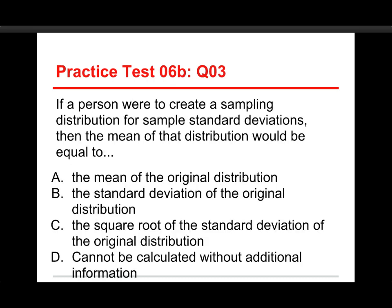Number 3: if a person were to create a sampling distribution for the sample standard deviations, then the mean of that distribution would be equal to what? The choices are A, the mean of the original distribution; B, the standard deviation of the original distribution; C, the square root of the standard deviation of the original distribution; or D, it can't be calculated without additional information. The answer is B — the mean of the distribution of sample standard deviations equals the standard deviation of the original distribution. When you make a sampling distribution, it's centered around the population value of whatever statistic you're computing.